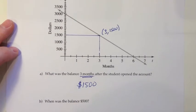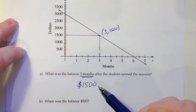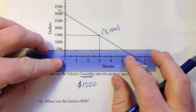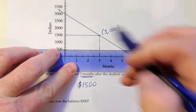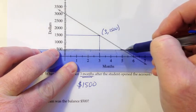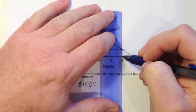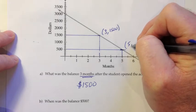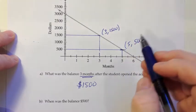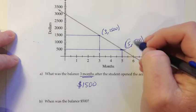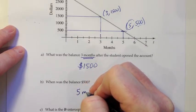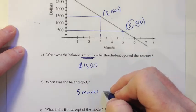Then moving on to the second question. When was the balance $500? So this time, since they're giving us something on the vertical, they're giving us the y-coordinate. And we'll start off with the $500. And we'll draw across from there until we hit the graph. And then from there, draw it down. And it looks like that would be after five months. So again, we could write an ordered pair there if we wanted. It's five months and $500. When was the balance $500? That would be five months after the student opened the account.